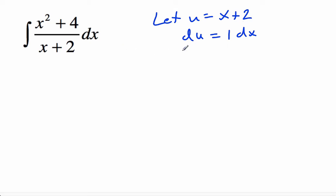So with that u-substitution, we can replace the denominator with u, and dx with du. Now the numerator, we have an x squared plus 4, so we can solve this for x, and we'll have x equals u minus 2, so we can say u minus 2 squared plus 4.